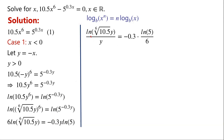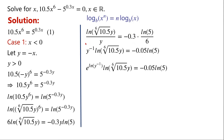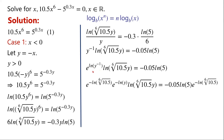By rearranging the equation, we can write ln of the 6th root of 10.5y over y equals 0.3 times ln 5 over 6, which equals 0.05 ln 5. Now, 1 over y can be written as y to the power of minus 1, and y to the power of minus 1 can be written as e to the power of minus ln y. Here we have ln of the 6th root of 10.5y, and here we have minus ln y.